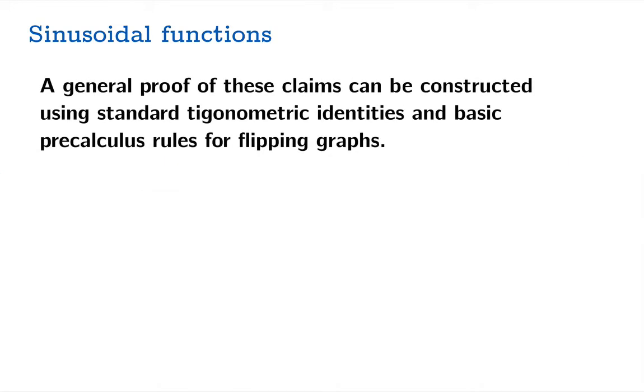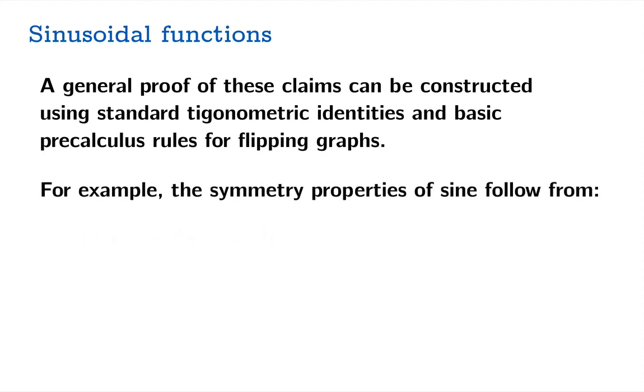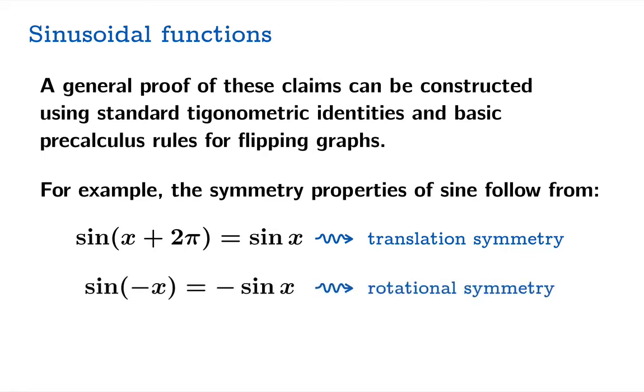All of these symmetries can be proved rigorously using standard trig identities that you should understand and know. For example, the identity sin(x + 2π) = sin(x), that's what leads to the translational symmetry. The fact that sine is odd, sin(-x) = -sin(x), that leads to the rotational symmetry about the origin. And the fact that sin(π - x) = sin(x), that leads to a reflection symmetry about the vertical line x = π/2. Mixing these results, you can show that these symmetries occur at all the places indicated in the previous slides. We're not going to prove these facts, but we are going to use them in what follows.